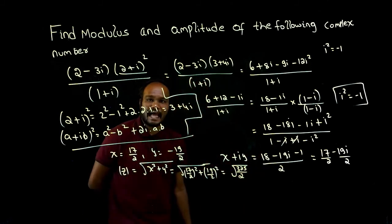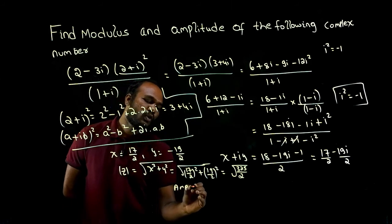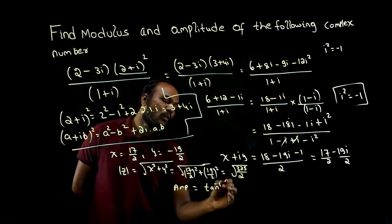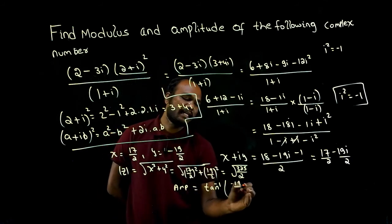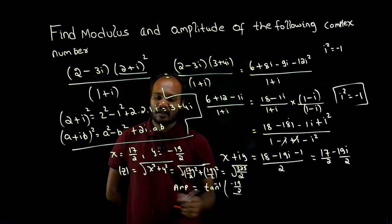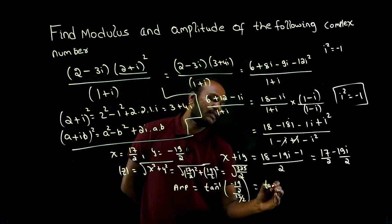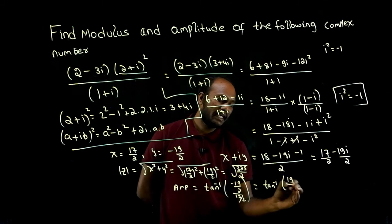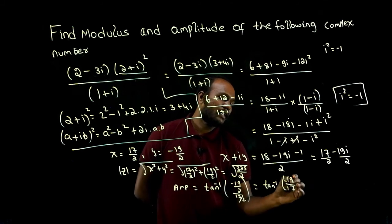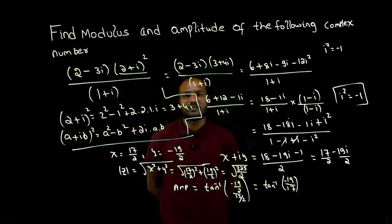If I want to calculate the amplitude: amplitude is tan inverse of y over x. y is minus 19 over 2, and x is 17 over 2. The 2s cancel, giving tan inverse of minus 19 over 17. You can keep it as is because it doesn't simplify to a standard angle.